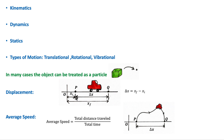Displacement is the shortest distance between two points — the straight line connecting them. Suppose the car takes a longer path from P to Q instead of the straight-line path. The displacement is still the same: x-final minus x-initial, because displacement depends only on the initial and final positions and does not depend on the path taken. The total distance traveled, however, equals the length of the actual path.